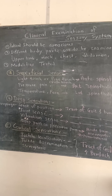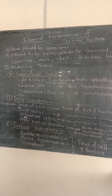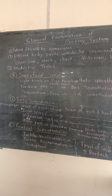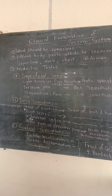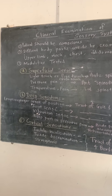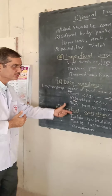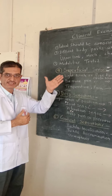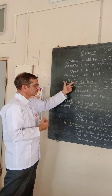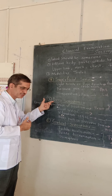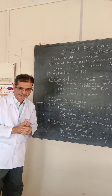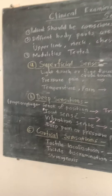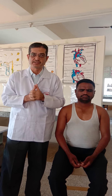In this order we are going to examine the sensory system, and we have divided this examination into three points: superficial senses, deep sensations, and cortical sensations. Let us start with superficial senses. The first superficial sensation we are going to examine is light touch, also called fine touch or crude touch.